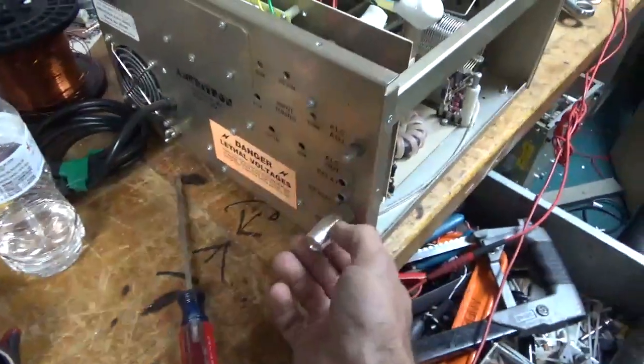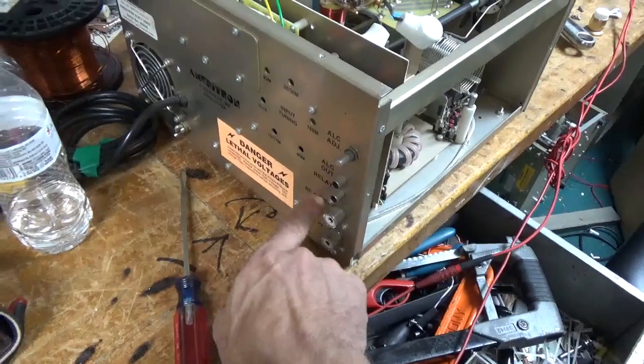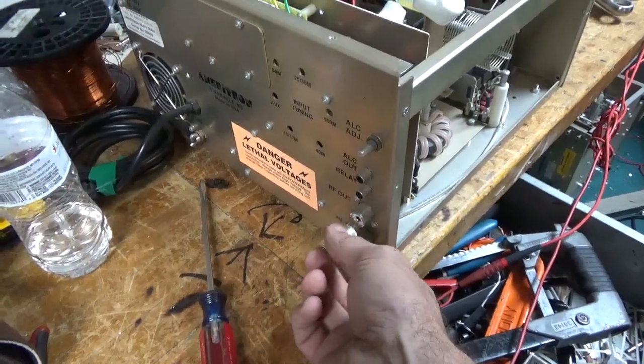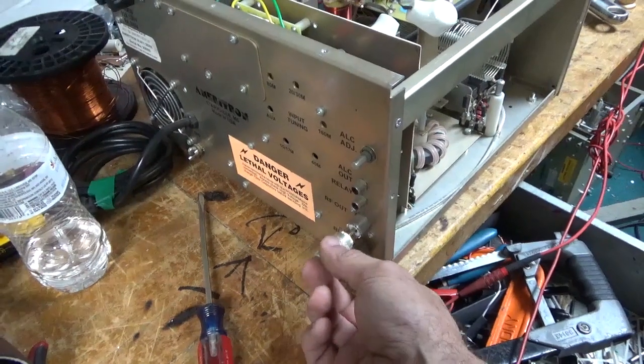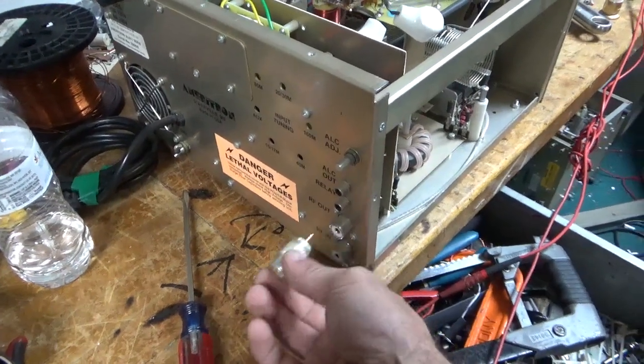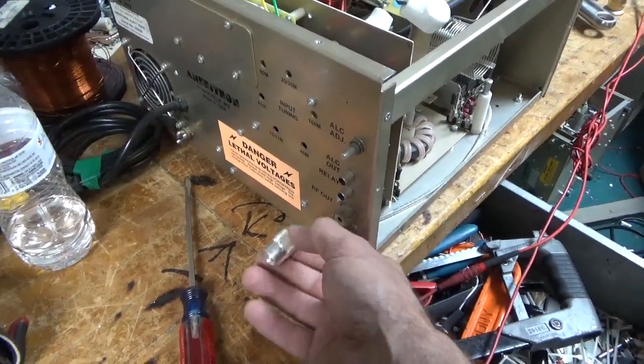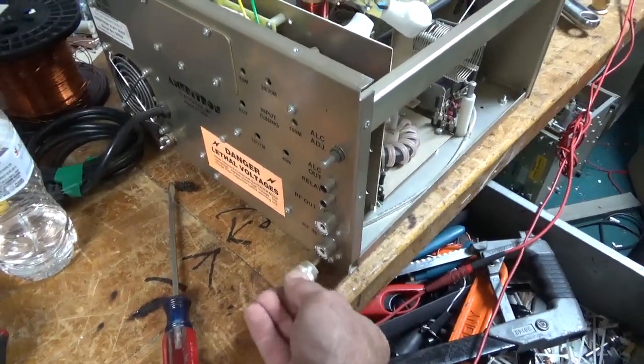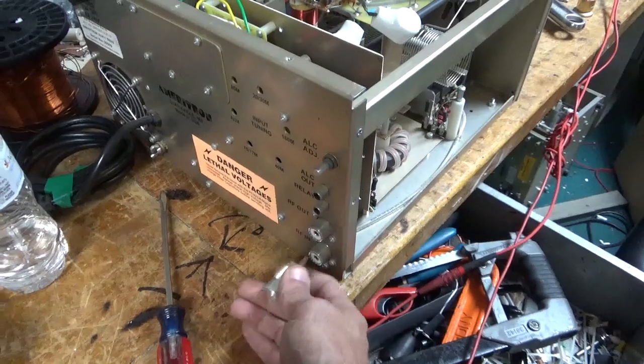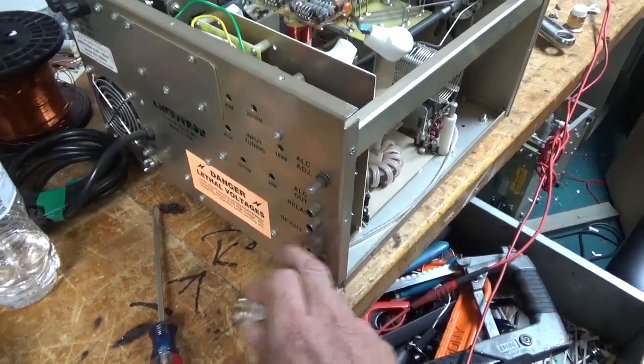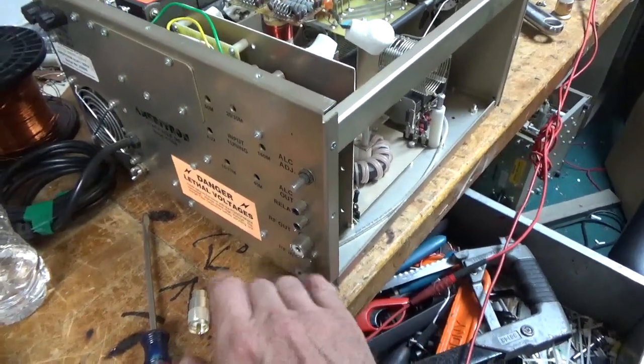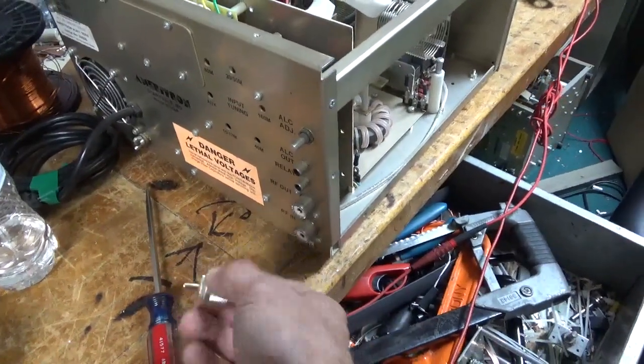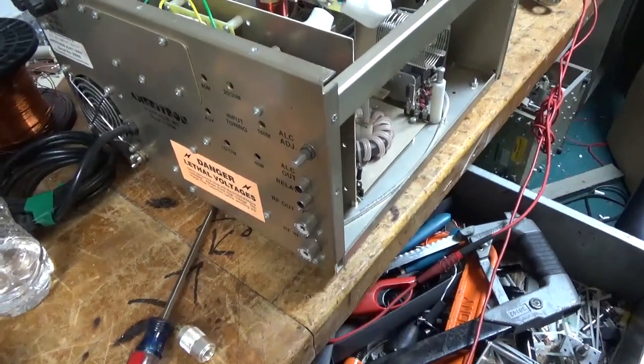I'm going to show this on video. Here's the output SO239 and the input. New, close to new, PL259. You can see it doesn't have much grip. It just slips in and out very easily. This one has a little more grip. That's decent grip on this one, but the output one is the important one. You want that to have a really strong grip on the center pin. You never want to have an open on the output of the amplifier.